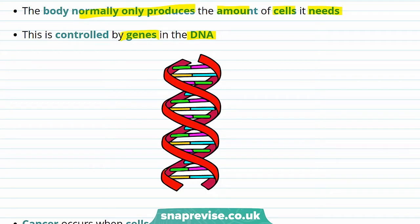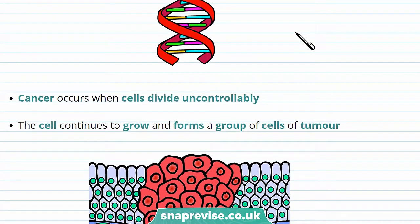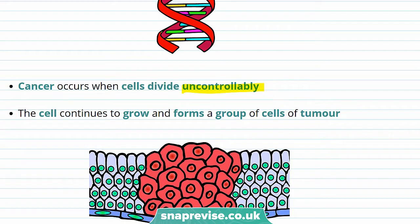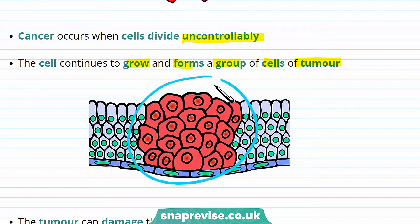So if cell division is so carefully controlled by the body, how does cancer occur? Well, cancer occurs when cells divide uncontrollably. This is when cells continue to divide and grow, forming a group of cells called a tumour. You can see in this diagram that the cells are large and have taken up a lot of space compared to the other cells around them.